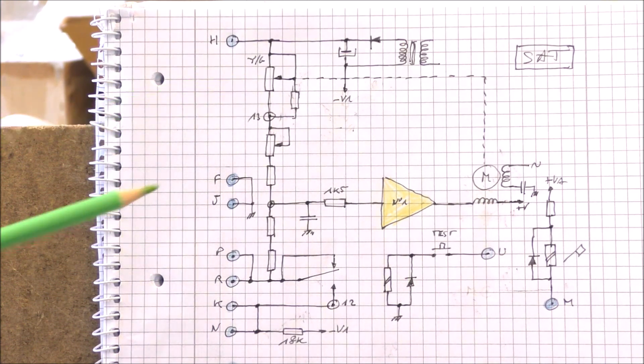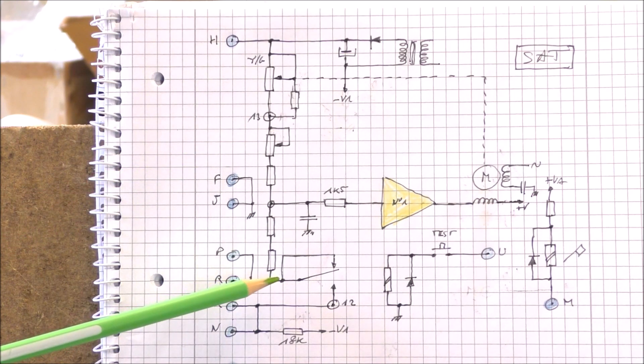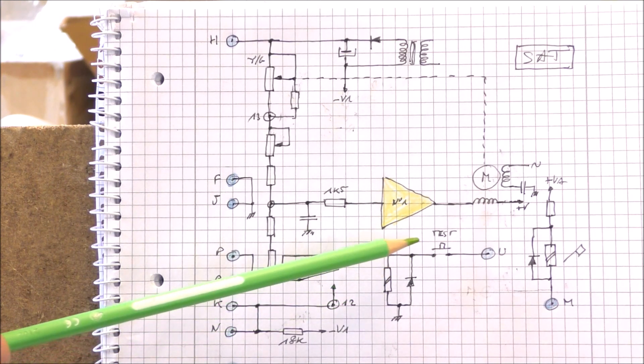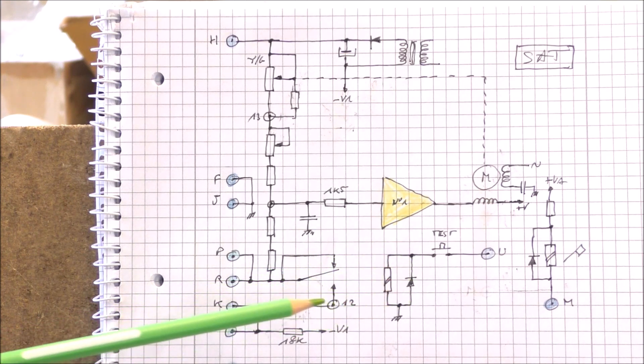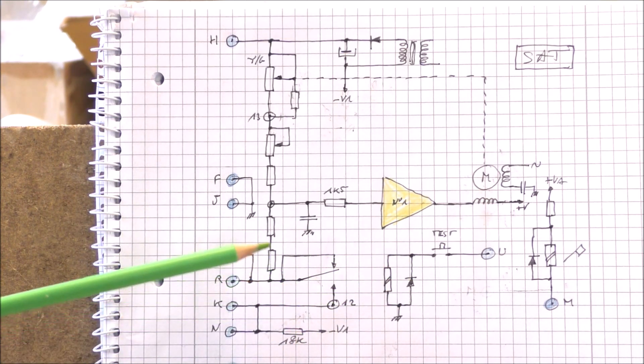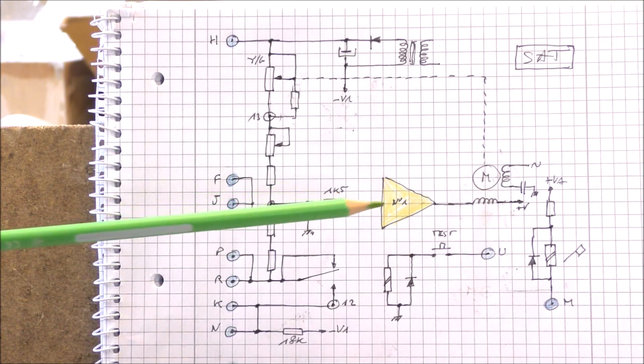The feedback potentiometer is here, actually it is used as a variable resistor. There is one trimmer here. We can see here a contact of the relay. So the relay is activated actually by the test button here. So when the test button is pressed, the voltage here is applied to that side. This permits to have a modification of the indication here.